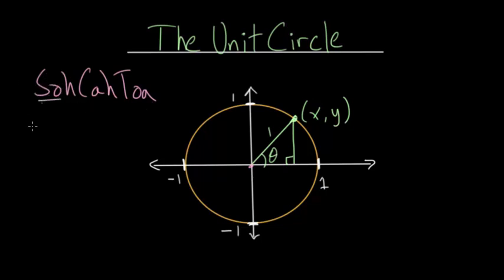The sine of theta equals the opposite divided by the hypotenuse. For our triangle here,